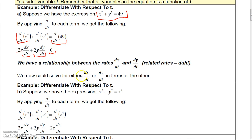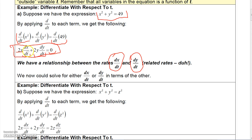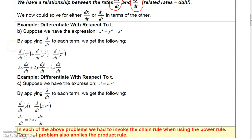What we now have is a relationship between two rates: we know how dx/dt and dy/dt are related to each other — and that's why they're called related rates. If we wanted to, we could solve for dx/dt in terms of the other variables, or solve for dy/dt in terms of the other variables.